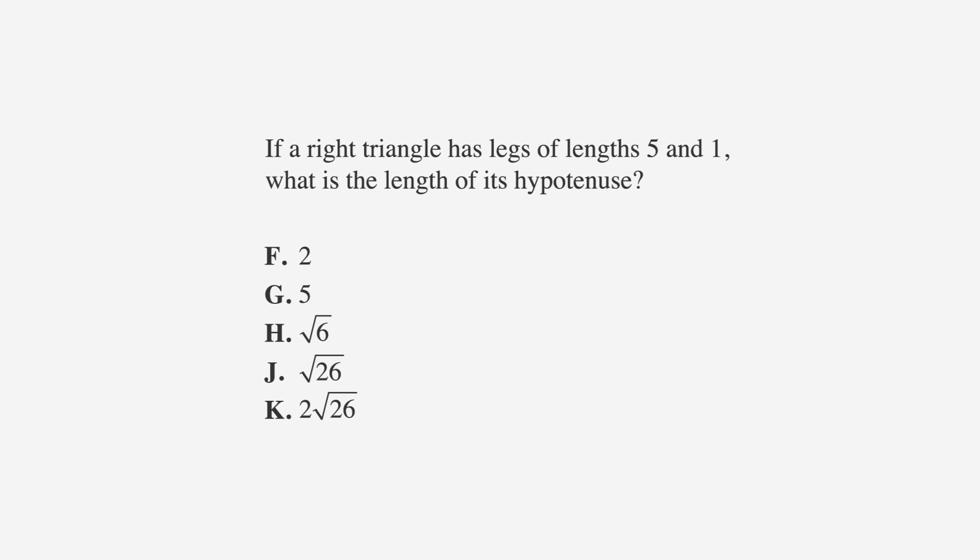Let's apply this to an ACT problem. If a right triangle has legs of lengths 5 and 1, what is the length of its hypotenuse? F is 2, G is 5, H is the square root of 6, J is the square root of 26, and K is 2 times the square root of 26.